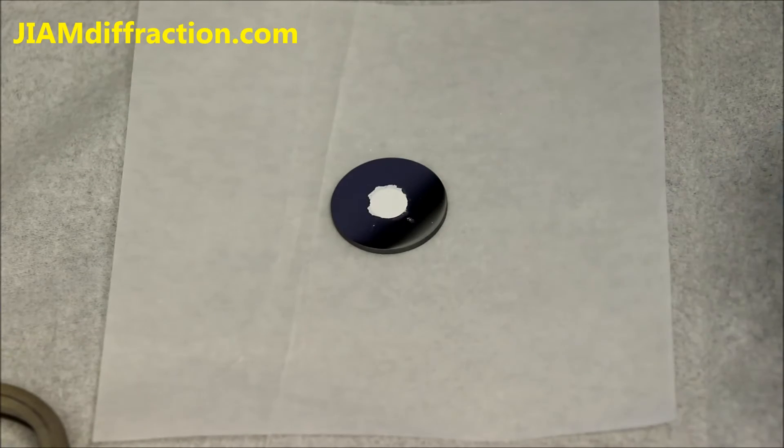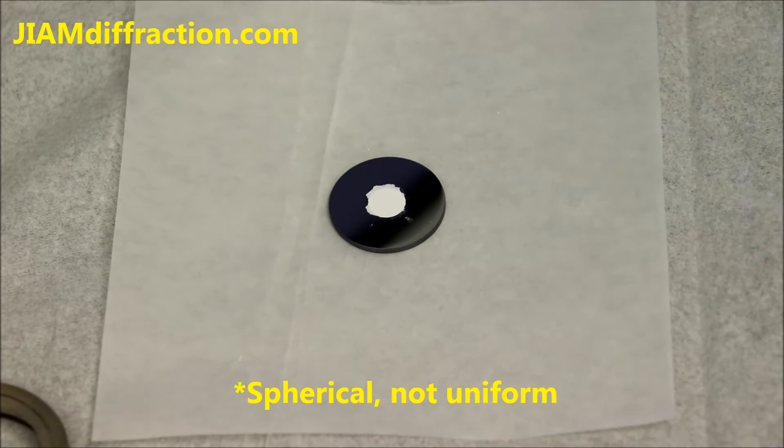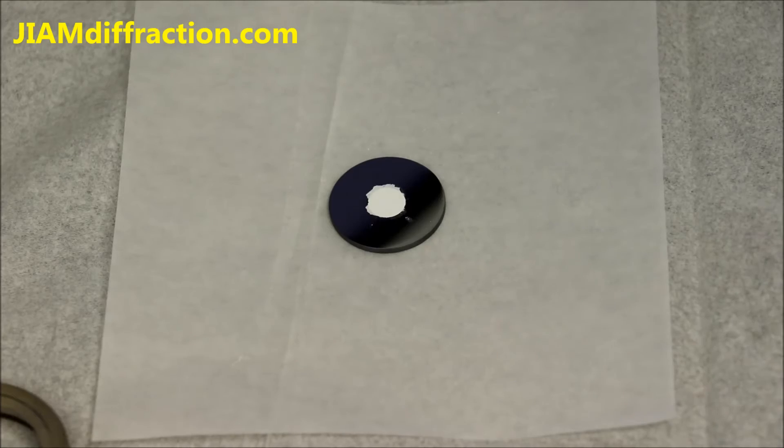This works best if your sample has particles that are more uniform in shape. If it's something like a plate then pressing down does cause preferred orientation which can affect your phase identification, but it should be fine for this sample.